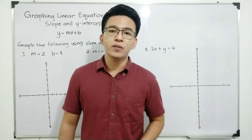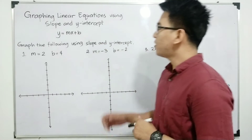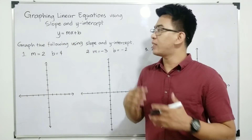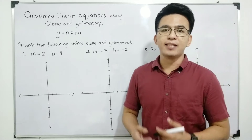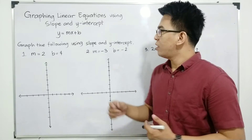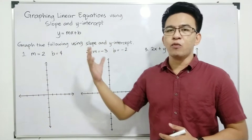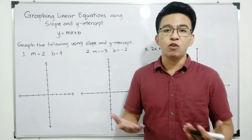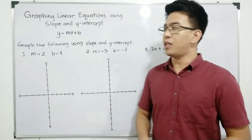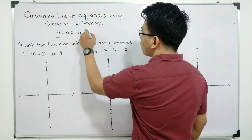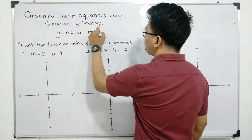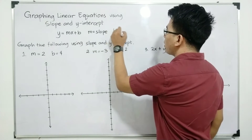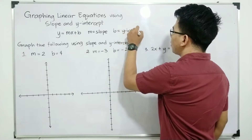So without further ado, let's do this topic. We have here the slope-intercept form, which is y is equal to mx plus b. This form is another way to represent an equation wherein you can easily identify the value of the slope and the y-intercept. In this form, your m is the slope, and letter b is your y-intercept.